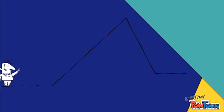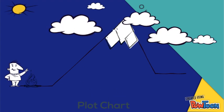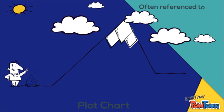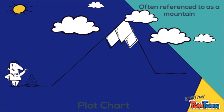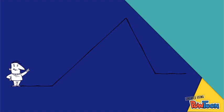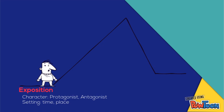When talking about a plot chart it is often referenced as a mountain because of the triangular, mountain-esque shape. To begin, we start with exposition, where characters are introduced such as the protagonist and antagonist, and setting such as time and place.